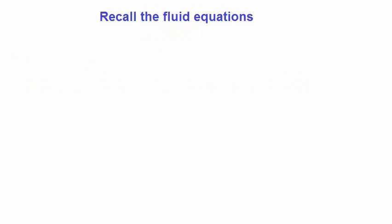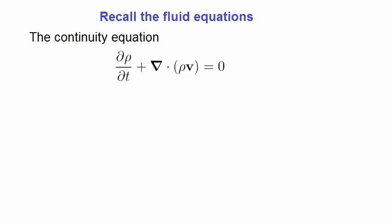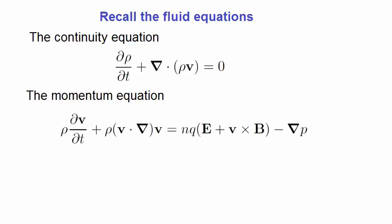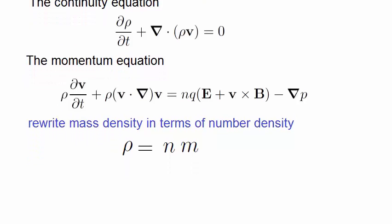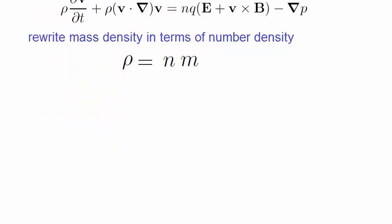Let's start by recalling the fluid equations. There were two equations, the continuity equation and the momentum equation, also sometimes called the force equation or just the equation of motion. In Plasma Physics, we find it more convenient to deal with number densities, so we convert the mass density rho into number density n by multiplying n by the mass of each particle m. So now the two equations become these.